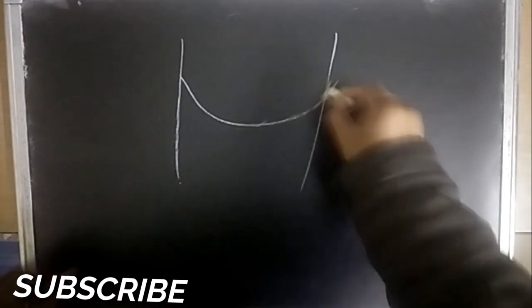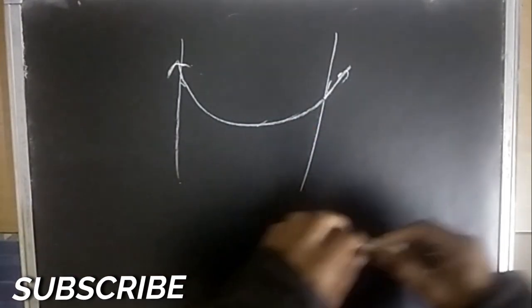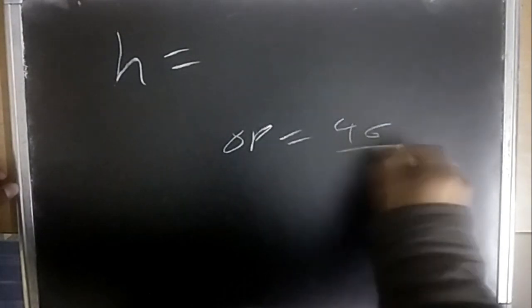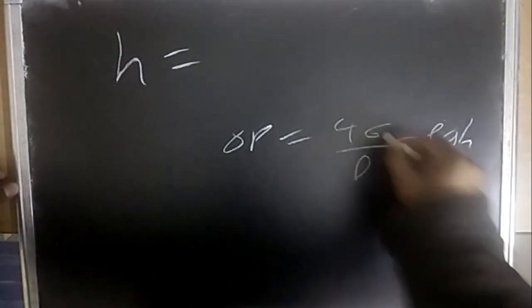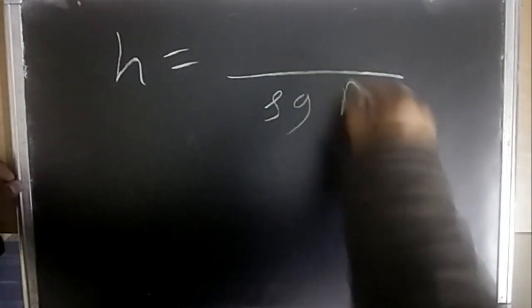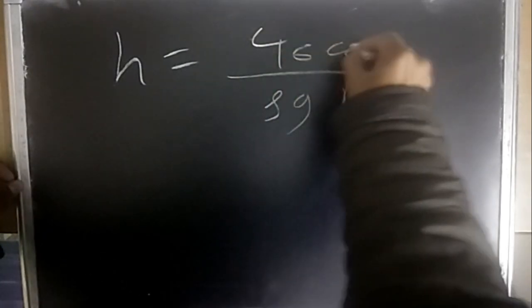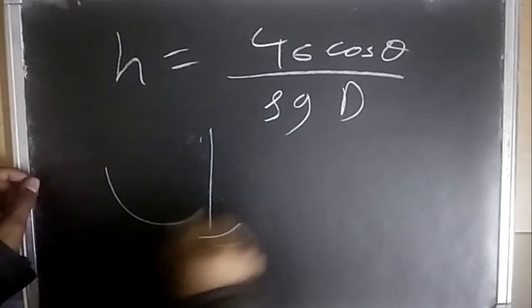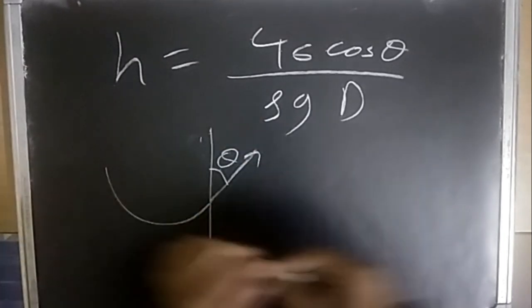The capillary rise height is given by h = 4σ·cosθ / (ρgd), where θ is the contact angle between the liquid and the capillary wall. Doing all these things, we finally find height h = 4σ·cosθ / (ρgd).